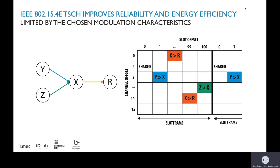So how can we solve this? What we introduce in this paper is support for multiple MCSs — multiple modulations — in one TSCH network, so you can tailor each link to the perfect modulation for that particular link. If a link connects a node to a parent that is very far apart, you choose a modulation with a very long transmission range, and so on for all other links.